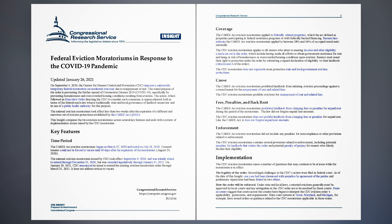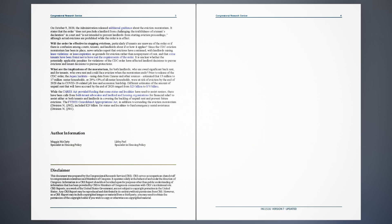On October 9, 2020, the administration released additional guidance about the eviction moratorium. It states that the order does not preclude a landlord from challenging the truthfulness of a tenant's declaration in court, and is not intended to prevent landlords from starting eviction proceedings, although actual evictions are prohibited while the order is in effect. Will the order be effective in stopping evictions, particularly if tenants are unaware of the order or if there is confusion among courts, tenants, and landlords about if or how it applies? Since the CDC eviction moratorium has been in place, news articles report that evictions have continued, with landlords raising lease violations or lease expiration as grounds for eviction rather than non-payment of rent, and that some tenants have been found not to have met the requirements of the order. It is unclear whether the potentially applicable penalties for violations of the CDC order have affected landlord decisions to pursue evictions and tenant decisions to pursue protections.